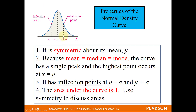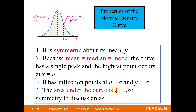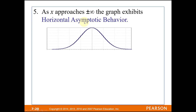The area under every continuous random variable curve equals 1, representing 100% of everything. The normal curve also exhibits asymptotic behavior: an asymptote is a straight line that a graph approaches. Out on the tails, the curve flattens out and looks more and more linear — that's horizontal asymptotic behavior. As x goes to positive or negative infinity, the curve approaches but never actually touches the x-axis.